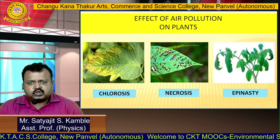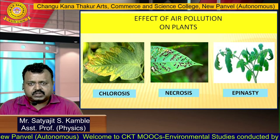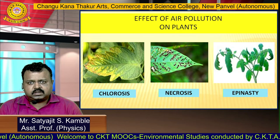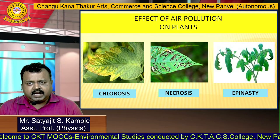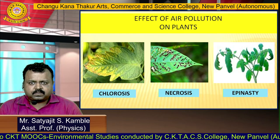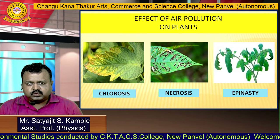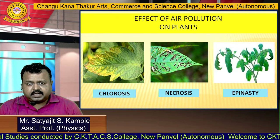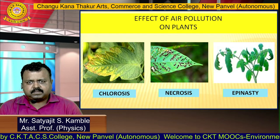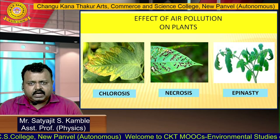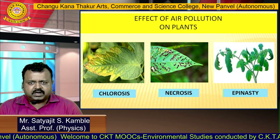Air pollution can also affect plants. There are a number of diseases in plants because of air pollution. Chlorosis is the disease in which leaves lose the chlorophyll pigment and turn yellow in color. Necrosis is the disease in which leaves develop tissues that are totally dead, so black spots are developed on the surface of leaves. Epinasty is a rolling down or curling of leaves in the presence of high pollutants.